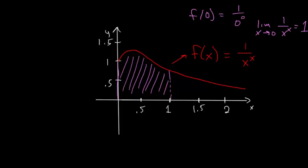But if we take the limit as x approaches 0 of 1 over x to the x, we can show that this is 1, though I won't actually show this in the video, but it is a fact that the function is 1 at an x value of 0, and it's also interesting to note that the maximum value of this function is at a y value of e to the 1 over e.